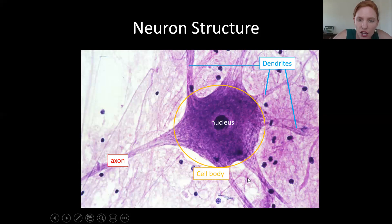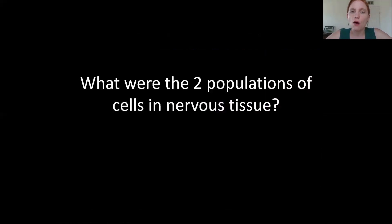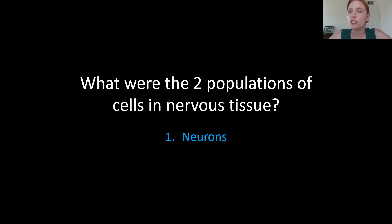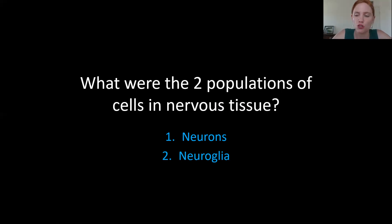Here would be the axon, and these smaller processes here would be the dendrites. So to summarize: in nervous tissue we have neurons — the ones that carry electrical signals — and neural glia, which we can think of as support cells that help out the function of those neurons.